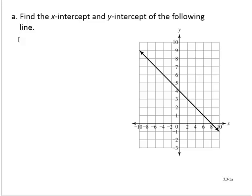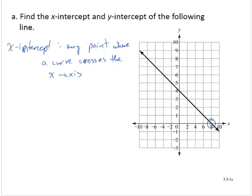Find the x-intercept and y-intercept of the following line. So the x-intercept is any point where a curve crosses the x-axis. So in this case, the x-intercept is this point: 8, 0.